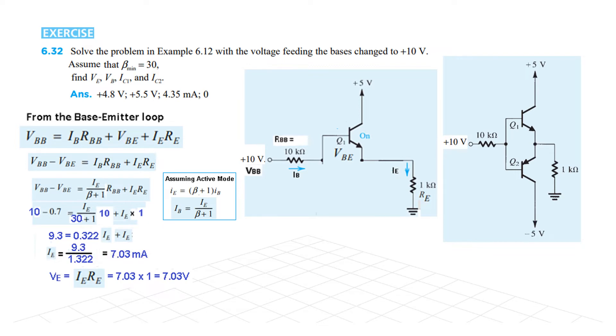Now since IE is 7.3 milliampere, therefore VE will be IE·RE and it will be 7.03 volt. So VE is 7.03 volt.